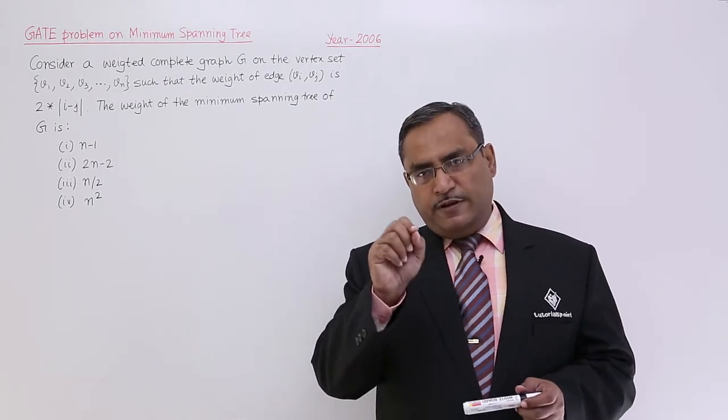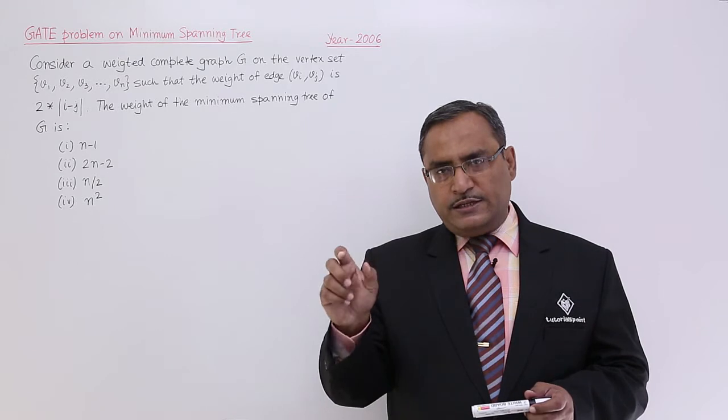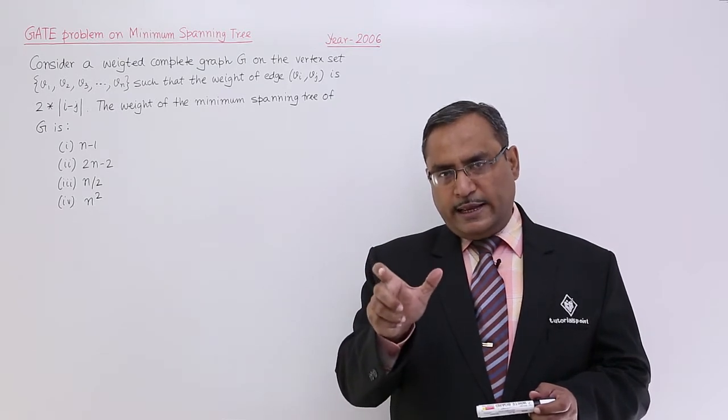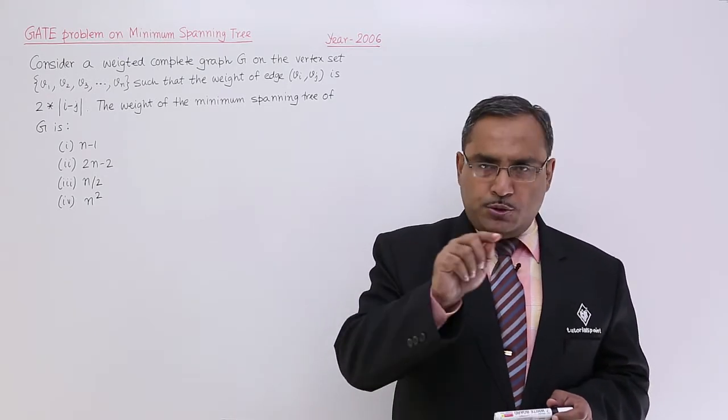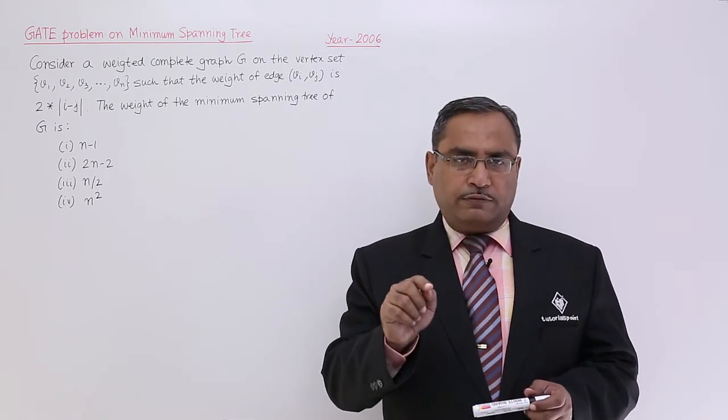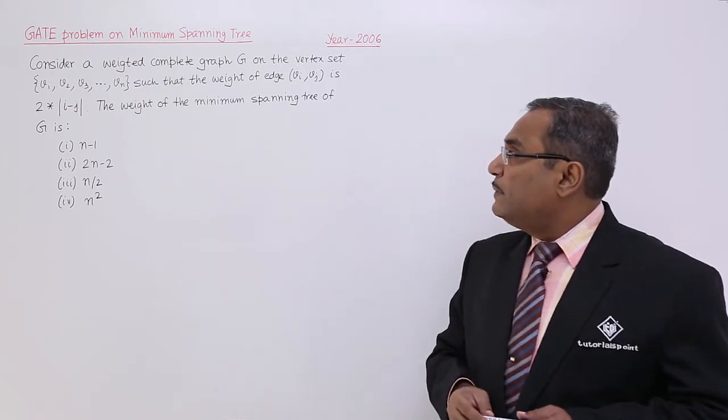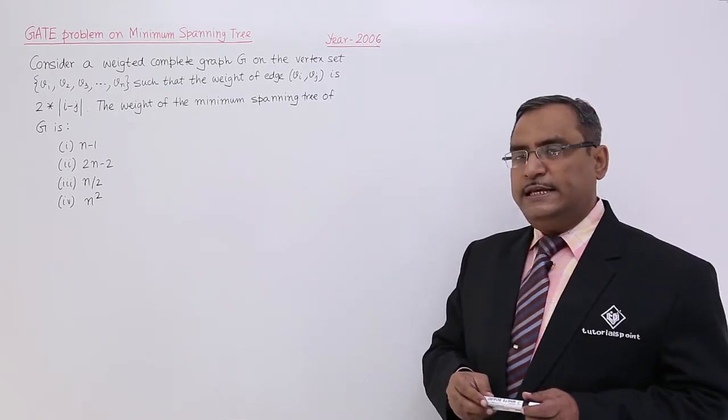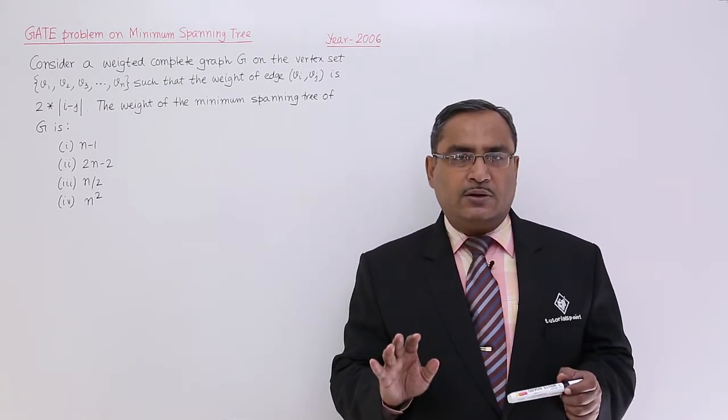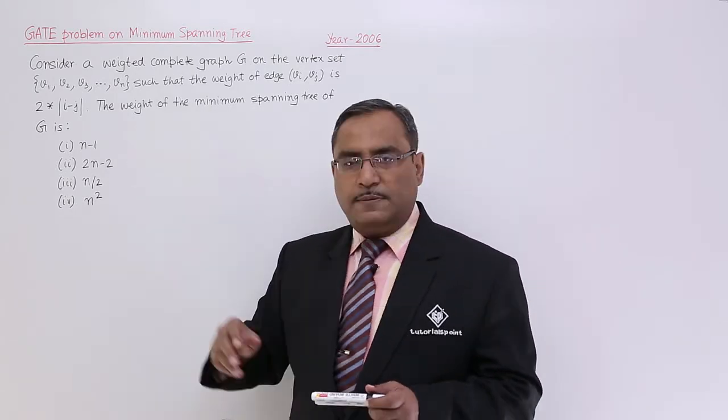That means if you want to consider edge (Vi, Vj) and its corresponding weight, the weight will be 2 times absolute of i minus j. The weight of the minimum spanning tree of G is - that is the question. We are having four options.